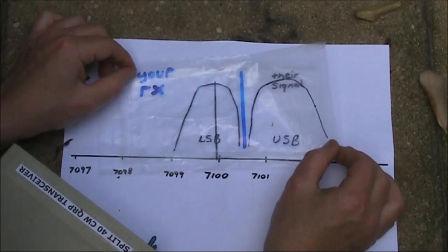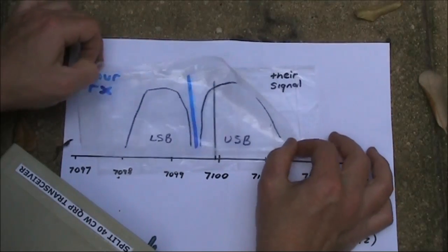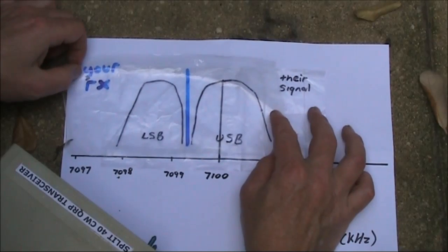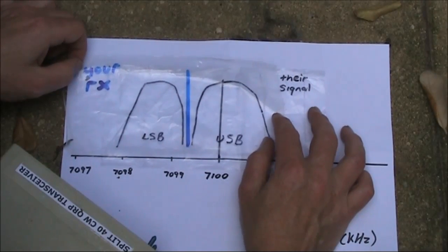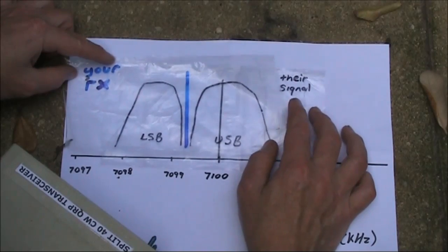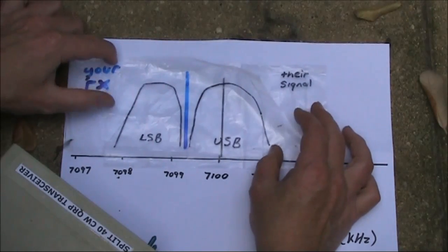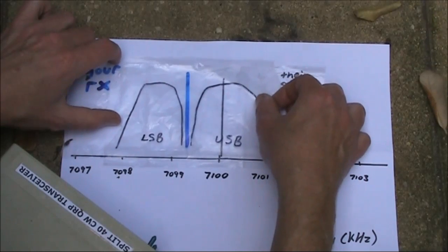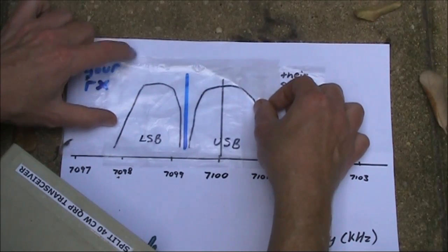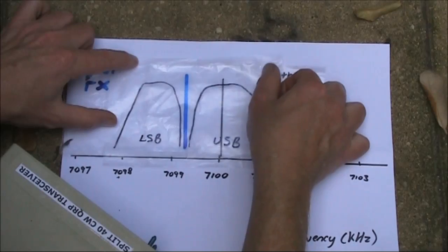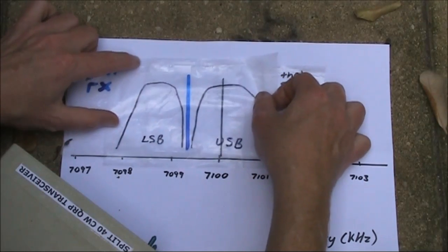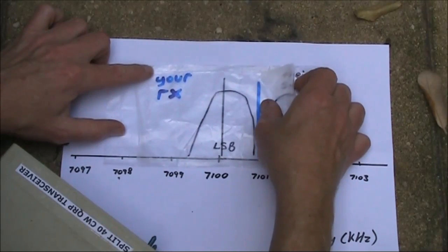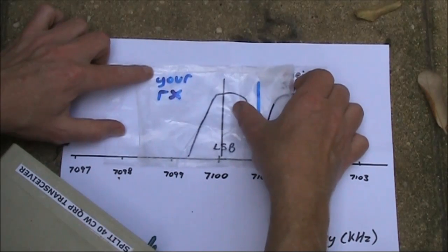There are actually two points where you could hear their signal. That is because you're using a direct conversion receiver. Because it doesn't have a crystal filter, or is so simple that it doesn't have phasing circuitry, it means that you hear their signal at two spots in the dial. That can make a direct conversion receiver more prone to interference.